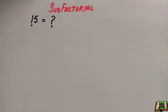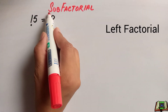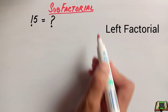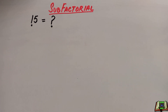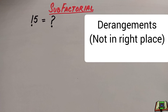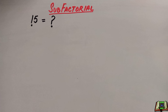Welcome! In this video we are going to solve sub-factorial of 5. As you can see, the factorial sign is before the number, so this is called sub-factorial, or sometimes it is called left factorial. The difference between factorial and sub-factorial is: n factorial is the number of permutations, whereas sub-factorial is the number of derangements — meaning no element is in its correct position.